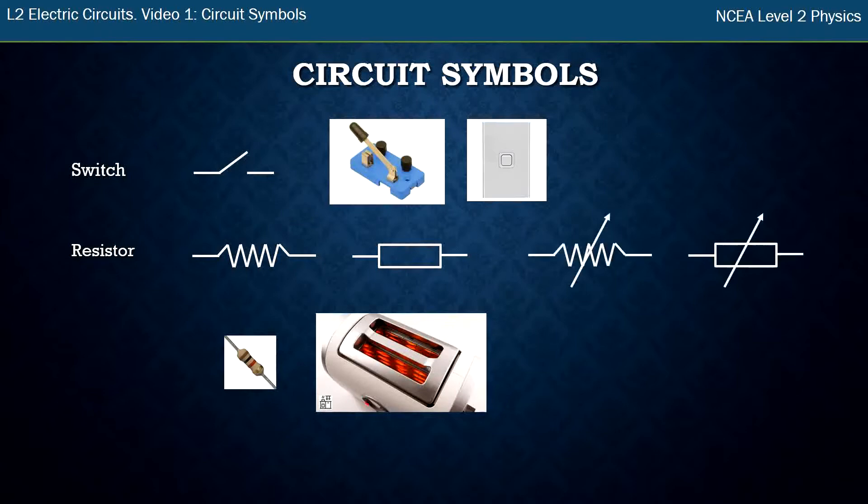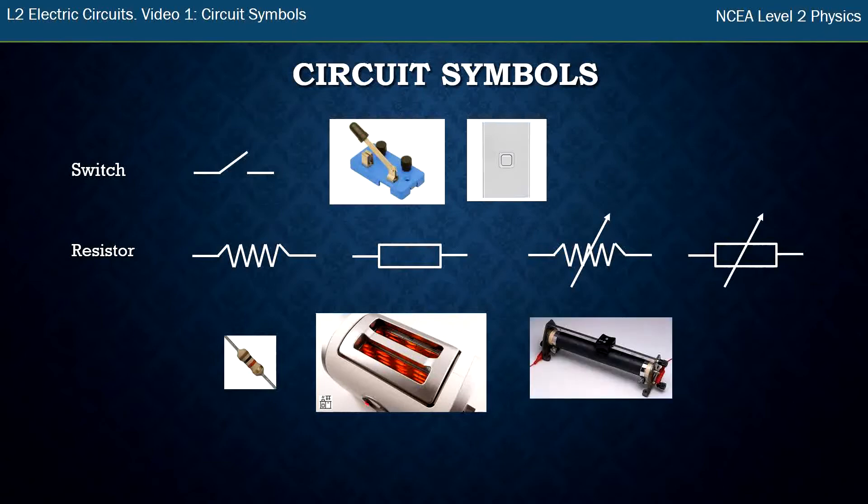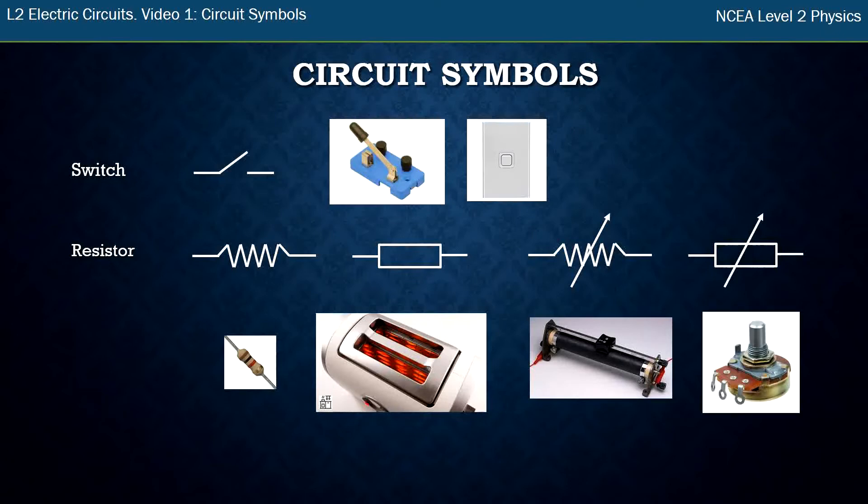You may also see the same symbols with an arrow through it. Now just like when you saw the battery symbol with the arrow through it, it means it's variable. So these are resistors where you can change the resistance, change how much electricity is turned into heat. So in your class you might have something like this, or in smaller circuits you get a variable resistor that looks like that.